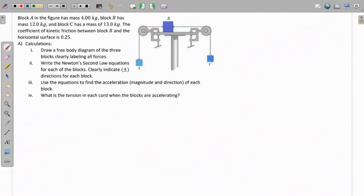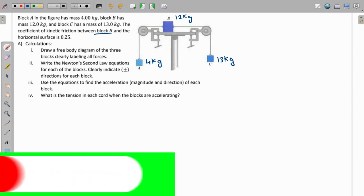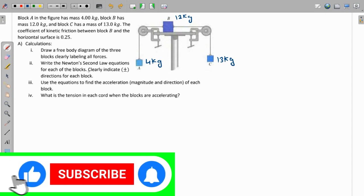This question: block A in the figure has mass of 4 kilograms, block B has 12.2 kilograms, and block C has 13 kilograms. So this is 13 kilograms, the heavier one; this is the lighter one, 4 kilograms; and this is 12 kilograms. There is some friction between block B and the floor, and this is the coefficient of friction. We have to draw the FBD for it, then write the second law of Newton and find the acceleration and the tension as well.